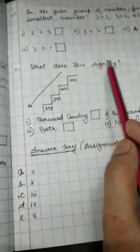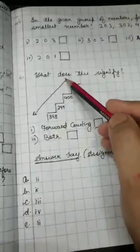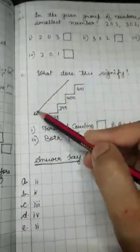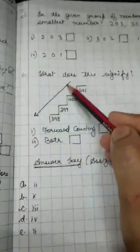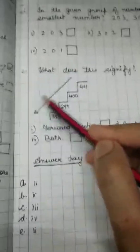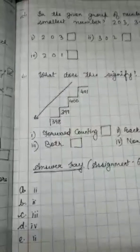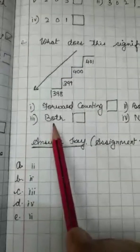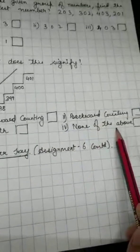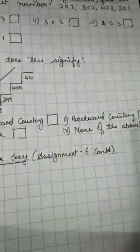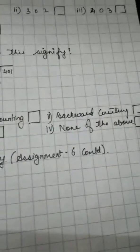What does this signify? See, this arrow, you have to see this arrow. This arrow is going down, right? This arrow is moving backward. So, you have to understand this is forward counting or backward counting or both or none of them. Whichever is the correct option, you will put a tick over here.